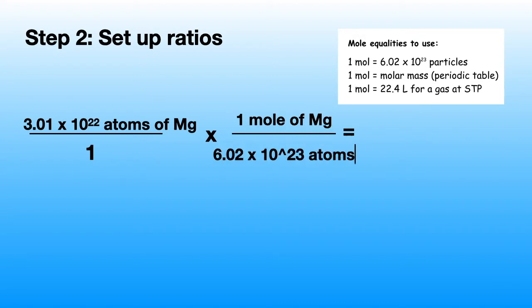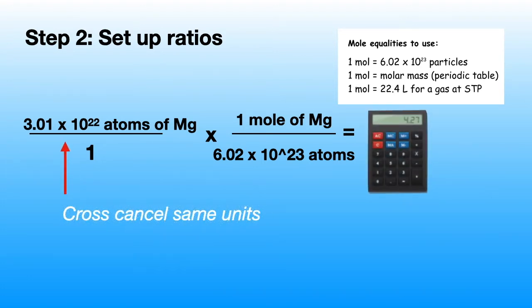Times 1 mole of magnesium divided by 6.02 times 10 to the 23rd atoms. 6.02 times 10 to the 23rd is Avogadro's number. It can be used to solve for molecules, particles, and atoms.